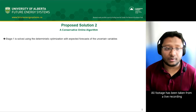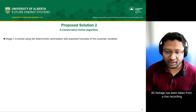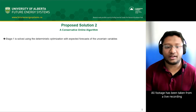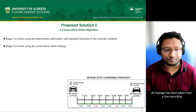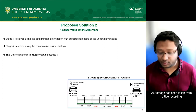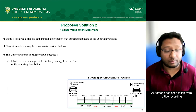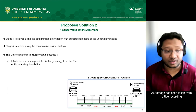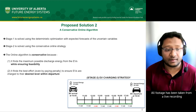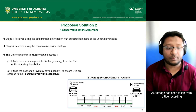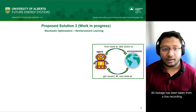Next, we have a more realistic and conservative online algorithm. Stage 1 is still solved using the MILP, but Stage 2 is handled by this online algorithm. It is conservative because it ensures EVs are charged to the maximum limit possible while ensuring feasibility, making a best-effort attempt to satisfy the energy amount each EV originally requested.